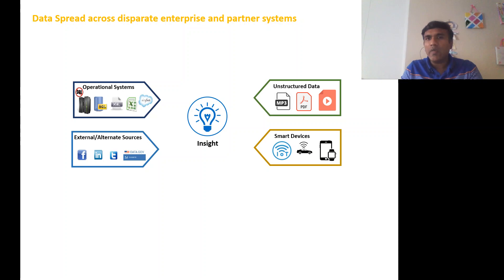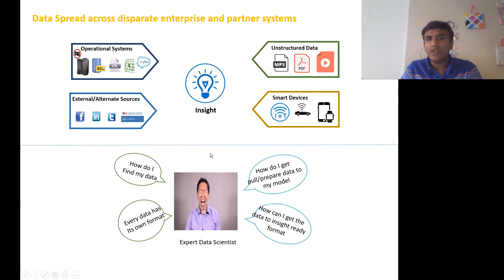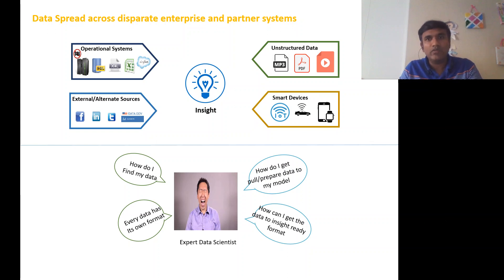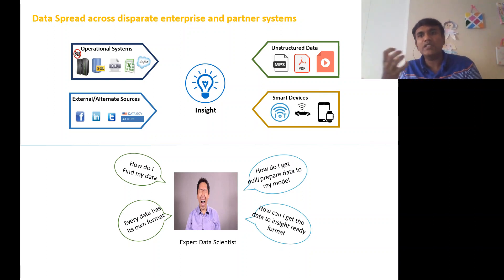Basically the data is spread across multiple source systems. Even if you have an expert data scientist, if you tell them the data is all over the place, it is very difficult to generate any insights from it. The data scientist's questions will be: how do I find my data? They will spend all their time just integrating data if you don't centralize it. Each data source has its own format — XML, PDF, IoT JSON files, mainframe data — making it very difficult to spend time on insight generation rather than data integration.